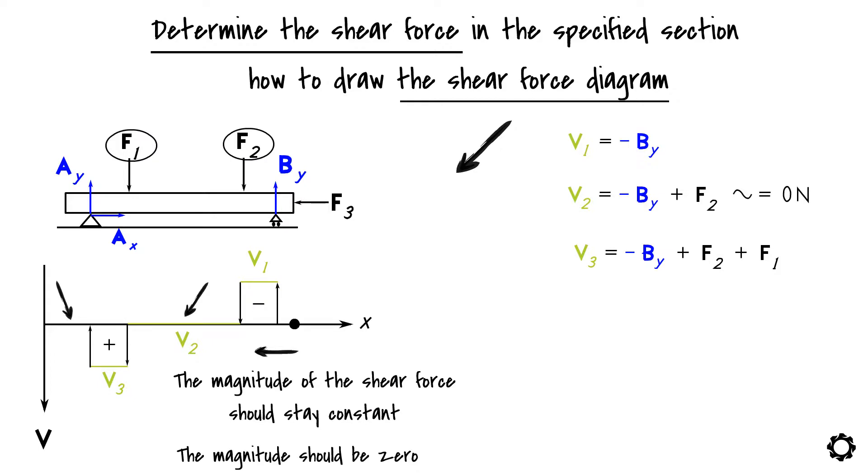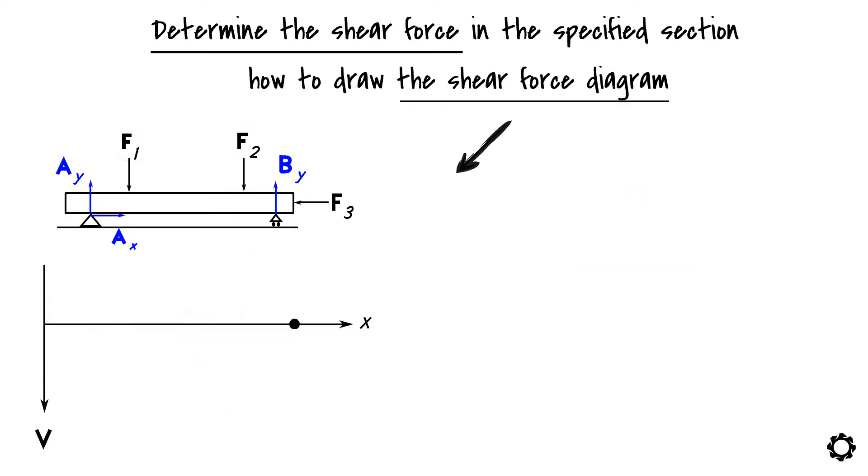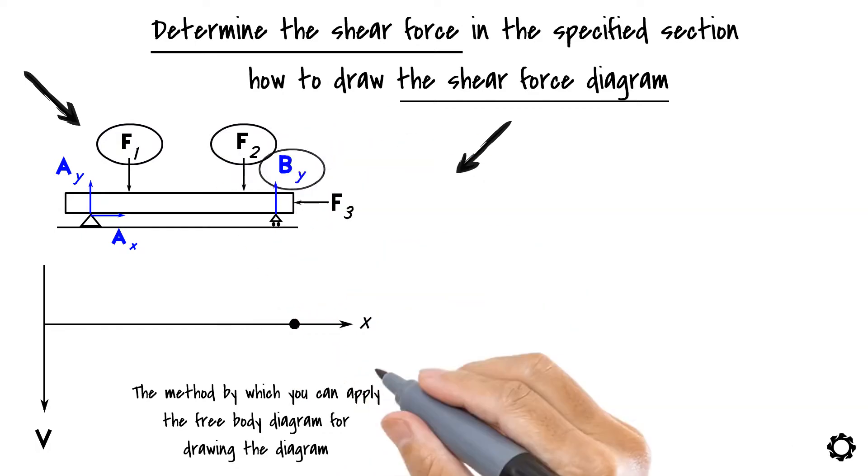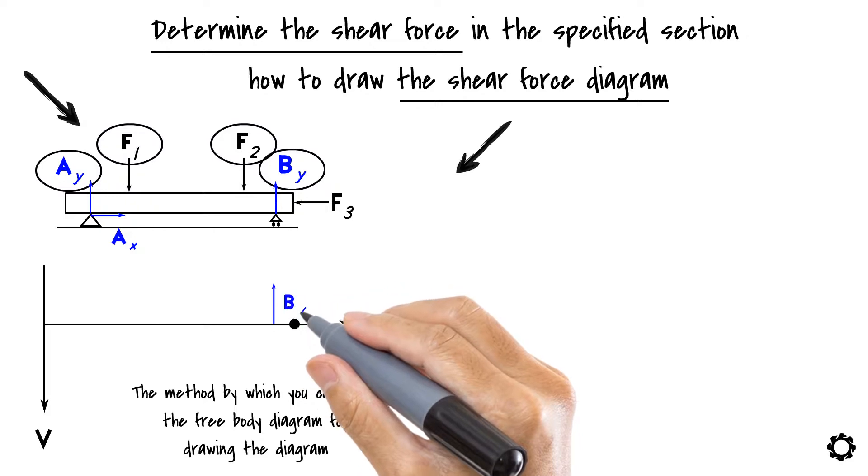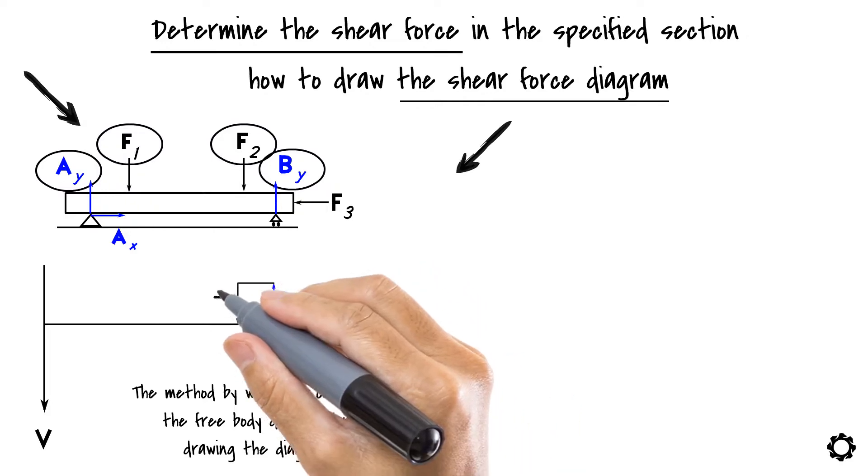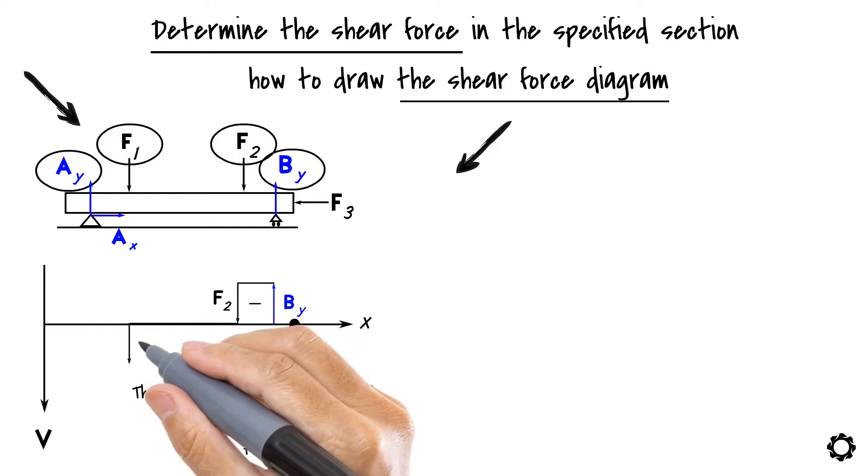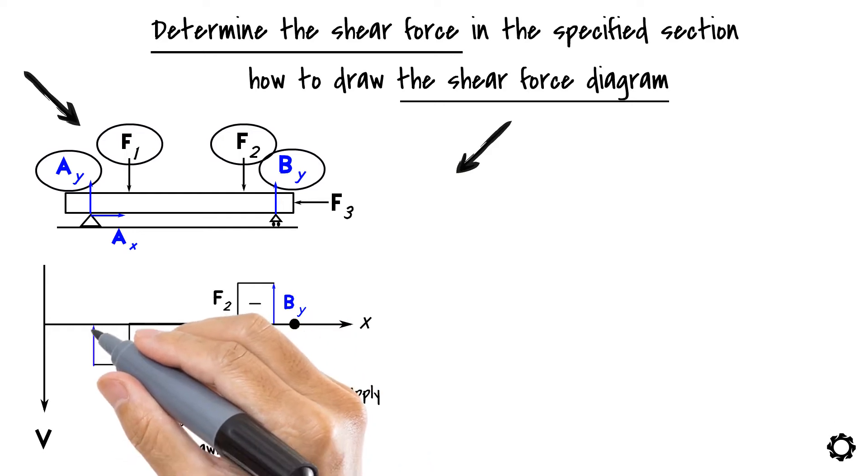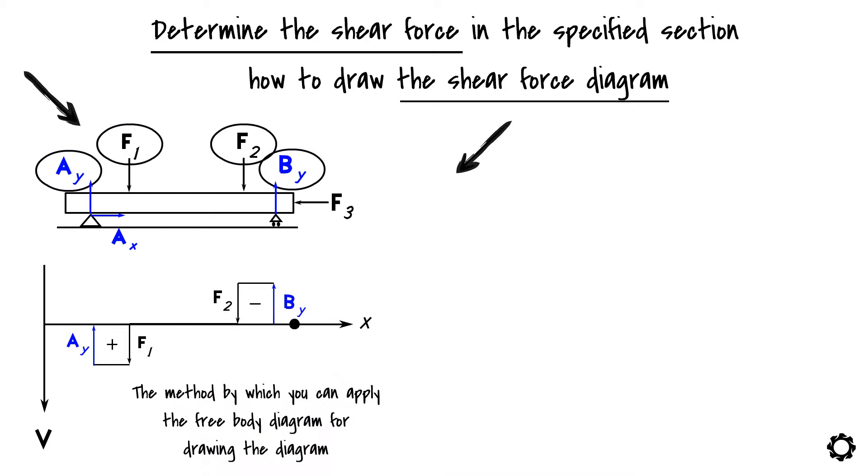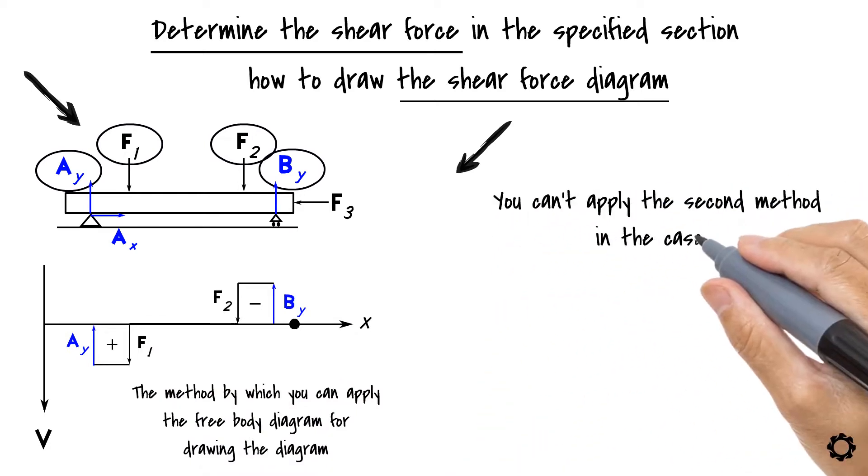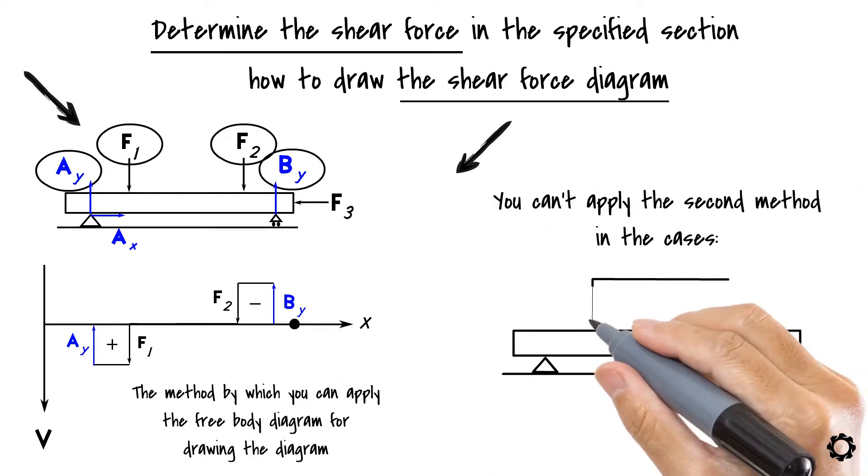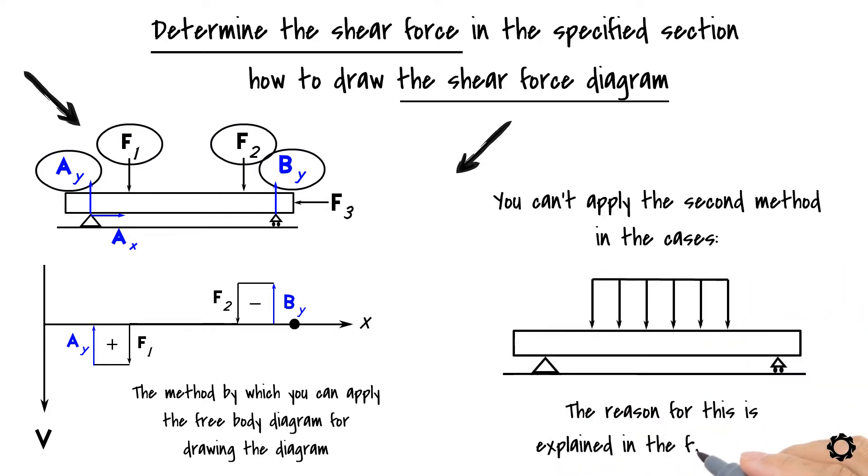There is also another method to define the diagram and for this purpose you need to use the free body diagram of the structure. The method by which you can apply the free body diagram for drawing the diagram relates to the values of the vertical point loads and vertical support reactions. This is because every time you encounter a vertical load or a vertical support reaction in the observed structure this is creating a jump in the diagram which has a corresponding magnitude with the value of the load or the support reaction. Note however that you can't apply this second method in the cases where the structure is subjected to distributed loading. The reason for this is explained in a future video.